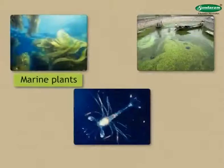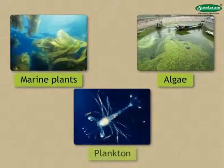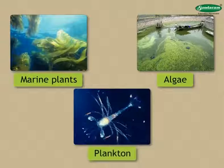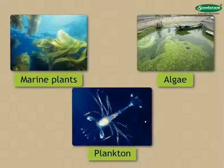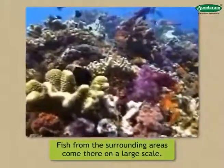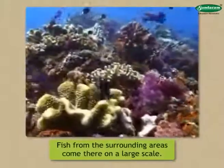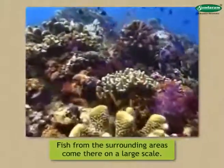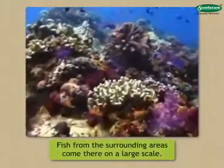Marine plants, algae, plankton, etc. thrive well in areas where warm and cold currents meet. This is food for the fishes. As a result, fish from the surrounding areas come there on a large scale and breed there. Hence, large-scale fishing grounds develop in such areas.